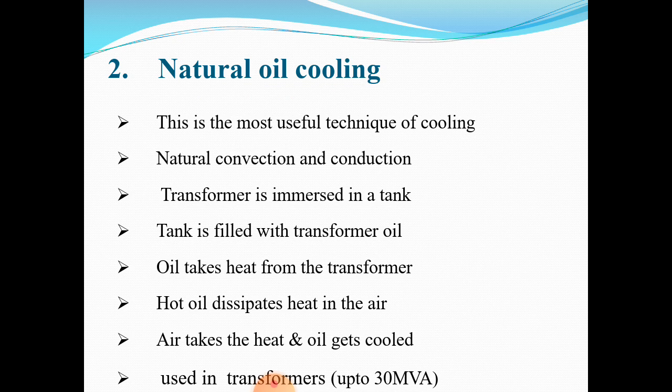Next is natural oil cooling. This is the most useful technique of cooling. Here, the transformer is placed in a tank filled with transformer oil. This oil is used to cool the transformer and provides insulation for the winding. The oil takes heat from the core and winding, then dissipates heat into the air by natural convection and conduction. The air takes the heat and the oil gets cooled by the circulation of natural air. This type of cooling is used for transformers rated up to 30 mega volt-amperes.